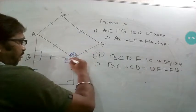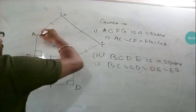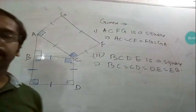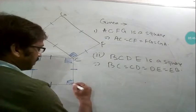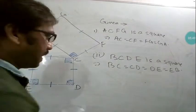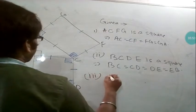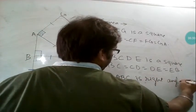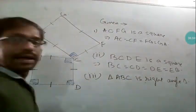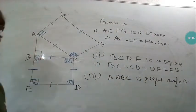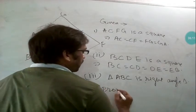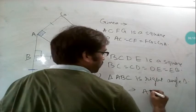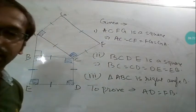One important thing: all angles of the squares are 90 degrees, and one angle of the triangle is also 90 degrees. When 90 degree angles are there, they are going to be used. So these three things have been given, and then we are asked to prove something. What we have to prove is that AD is equal to FB.